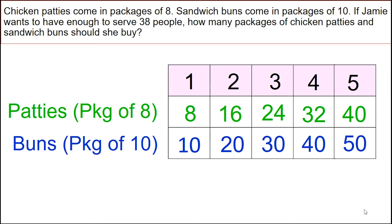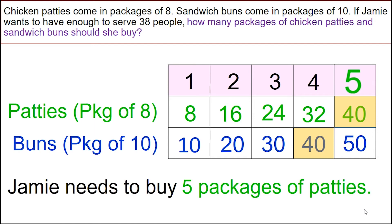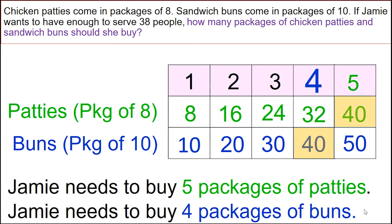As you can see, the number 40 appears in this row as well as in this row. Let's revisit the question: how many packages of chicken patties and sandwich buns should she buy? Looking at the row of the patties, if she buys five packages of chicken patties, that gives her 40 patties — good enough for the 38 people. Jamie needs to buy five packages of chicken patties and four packages of sandwich buns.